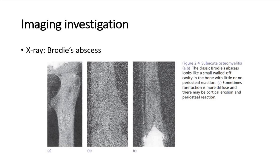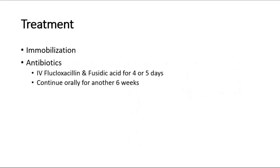For imaging, a significant finding on x-ray is the Brodie's abscess. Looking at this picture, panels A and B show the Brodie's abscess, which appears as a small walled cavity in the bone with little or no periosteal reaction. Treatment involves immobilization of the joint and antibiotic cover with IV flucloxacillin and fusidic acid for four or five days, then continued orally for another six weeks.